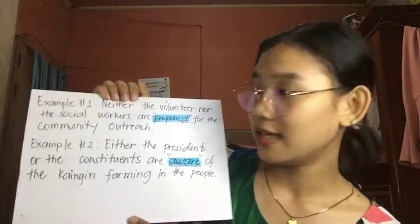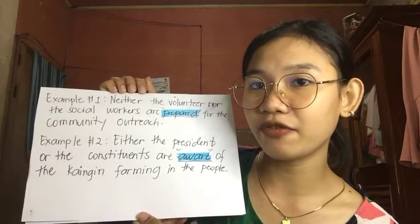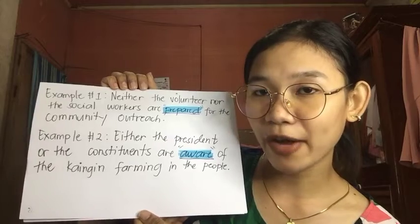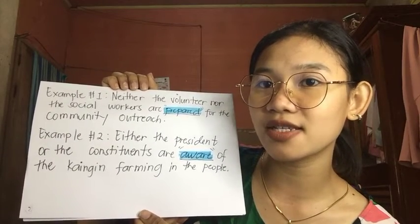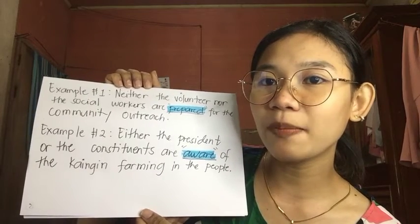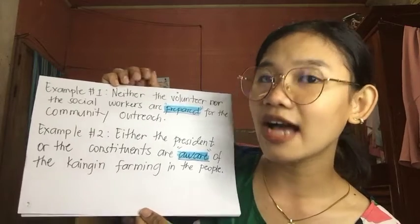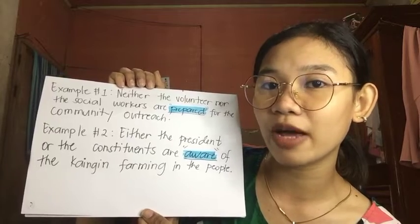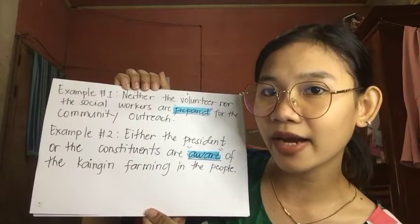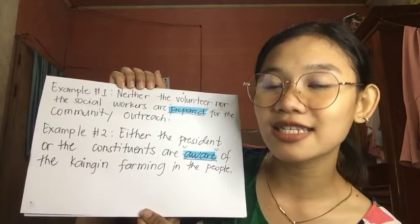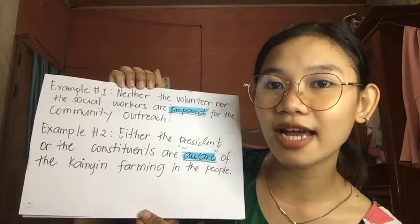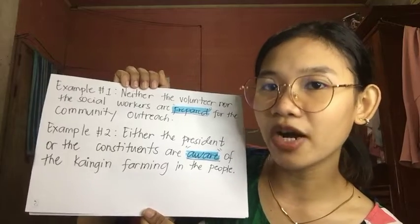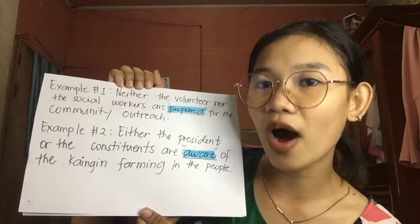Rule number five: when a singular and plural subject are connected by either/or or neither/nor, put the plural subject last and use a plural verb. For example, 'Neither the volunteer nor the social worker are prepared for community outreach.' Second: 'President or constituent are aware of the ongoing concern.' In both examples we have plural verbs 'prepared' and 'aware,' and the plural subject is placed last.